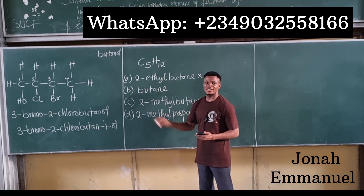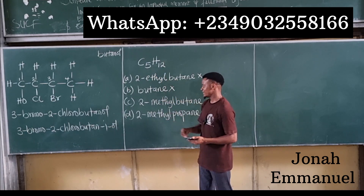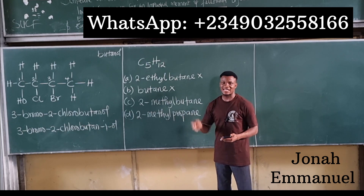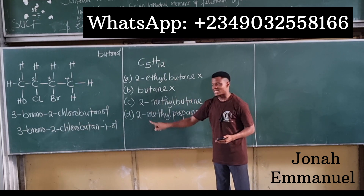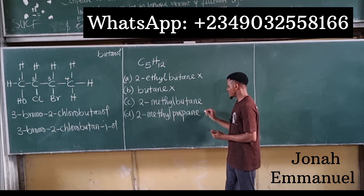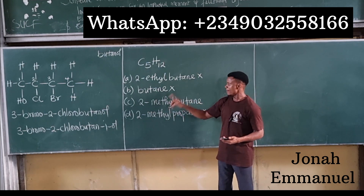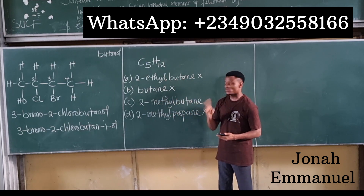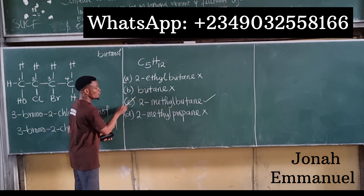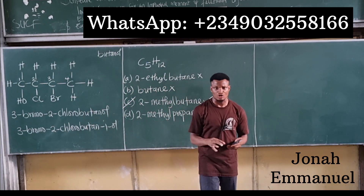Methylpropane: propane is 3 carbons, methyl is 1, giving 4 — not the answer. Then 2-methylbutane: butane is 4, methyl is 1, giving 5 carbons. So 2-methylbutane is obviously the answer. This is how you can speedily get the answer without even having to draw the structure.